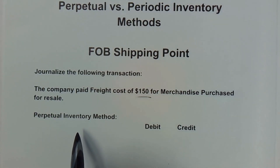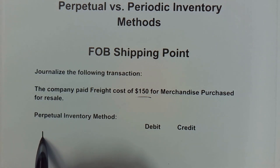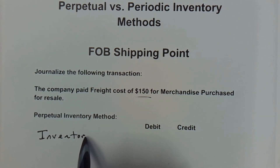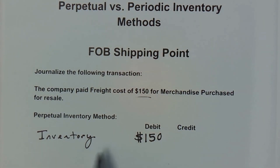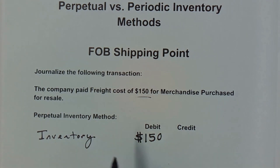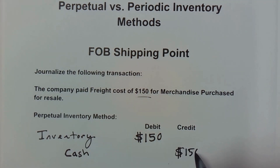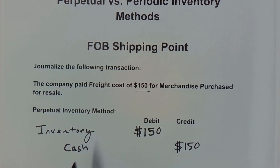In the perpetual inventory system, we need to account for that cost by placing it in inventory — we add that cost to the cost of the inventory, and ultimately it will flow through to cost of goods sold when that inventory is sold. So we're going to debit Inventory for $150, capitalizing it as an asset, and we're going to credit our Cash account because cash is going down by the $150 being paid. You have now properly accounted for the freight costs for FOB shipping point under the perpetual inventory method.